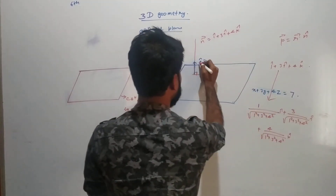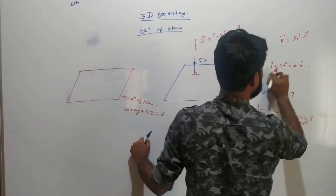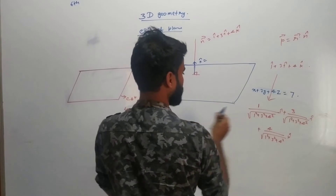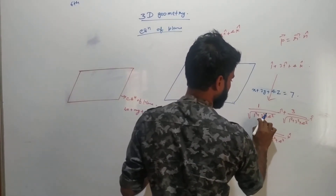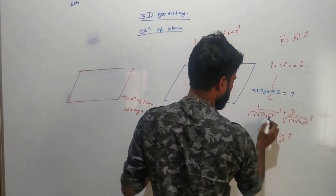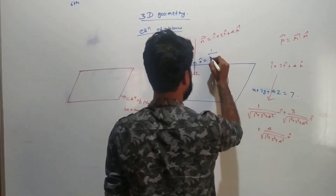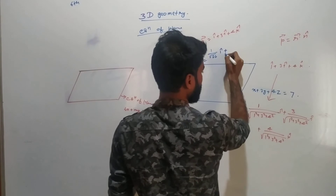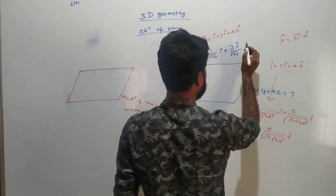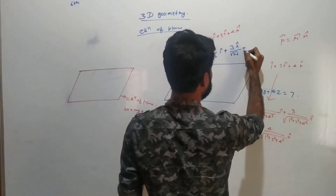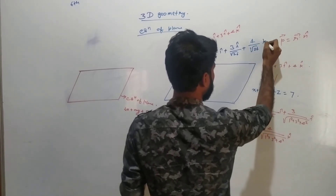So this n-cap is actually 1 plus 9 plus 16, which equals 26 under the square root. Therefore n-cap equals 1 upon root 26 i-cap, plus 3 upon root 26 j-cap, plus 4 upon root 26 k-cap.